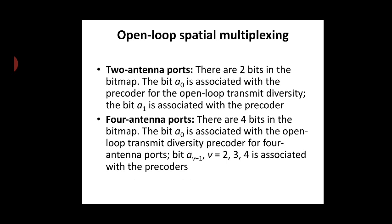Now let us look at open loop spatial multiplexing for 2 antenna ports and 4 antenna ports. For 2 antenna ports, there are 2 bits in the bitmap: A0 is associated with the pre-coder for open loop transmit diversity, and A1 is associated with the pre-coder index value O for V equal to 2, which is the normalized identity matrix.